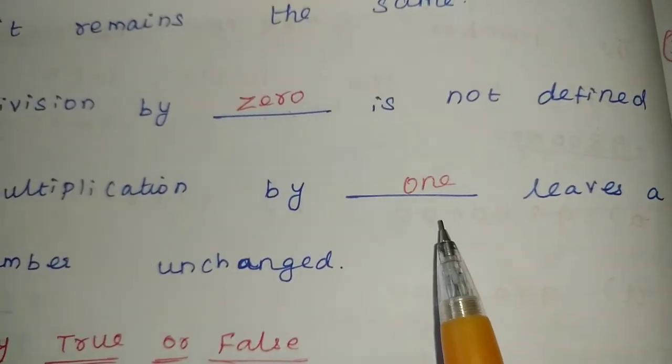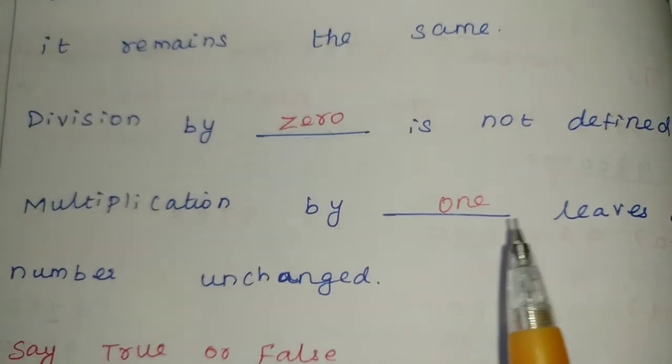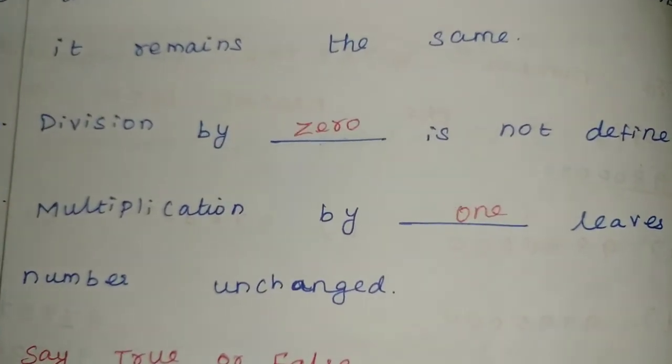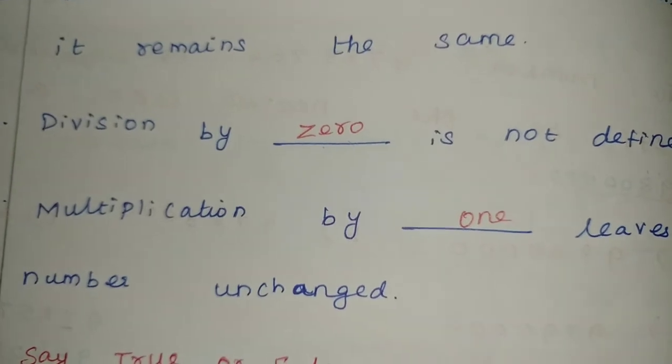When we multiply any number by 1, that same number will come. Nothing will change. Clear?